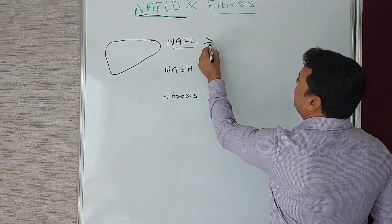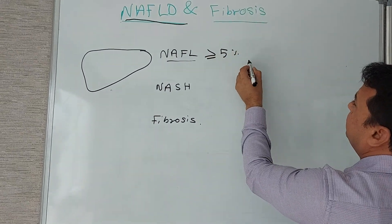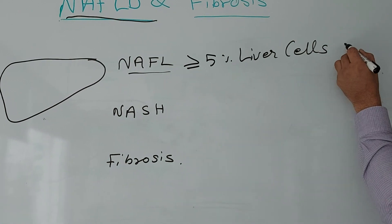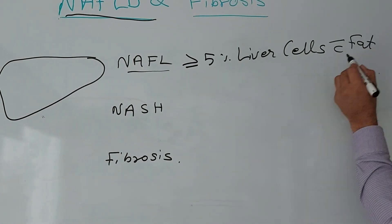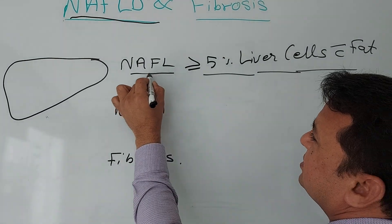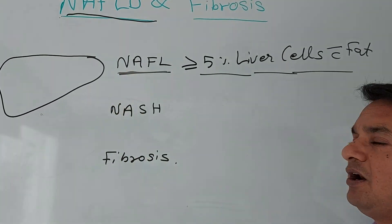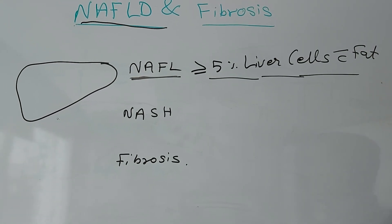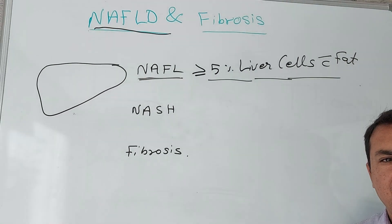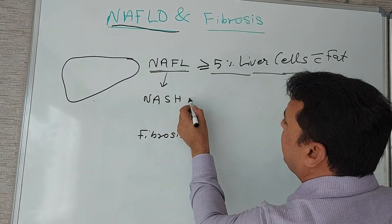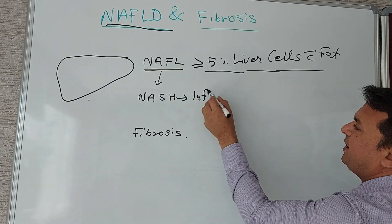more than 5% of liver cells are loaded with fat, we call it steatosis—simple steatosis or non-alcoholic fatty liver. Then as the disease progresses year on year, there will be inflammation development in the liver.